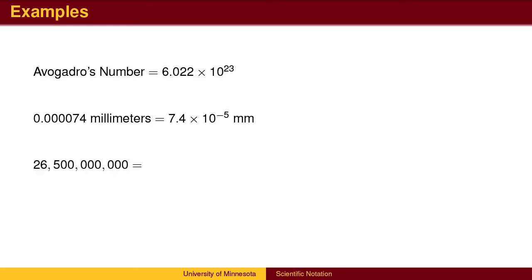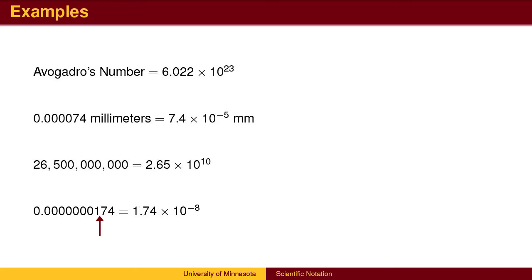In this third example, we move the decimal to the left 10 places. The scientific notation is 2.65 times 10 to the 10th. In the final example, we move the decimal place to the right 8 places. The scientific notation is 1.74 times 10 to the negative 8th.